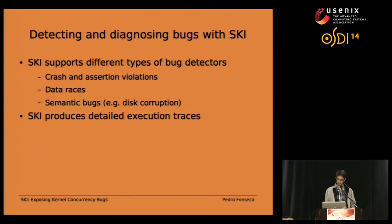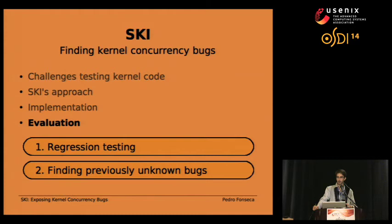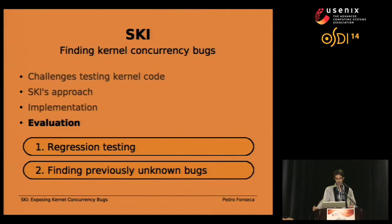Now I'll explain how we evaluated Ski. There are at least two use cases. On one hand, you could use Ski to build regression test suites — to see if a certain version of the kernel contains bugs that have already been fixed in previous versions. In a second use case, you could use Ski to find bugs in components of the kernel that have been recently developed, to increase confidence that kernel components are working correctly.